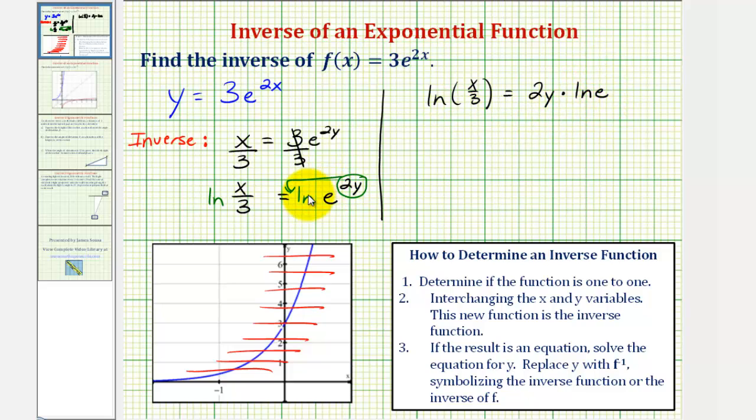We didn't have to use natural log e in order to apply this log property. But notice how because this is base e, natural log e is equal to 1. So this simplifies nicely to just natural log x divided by 3 equals 2y.